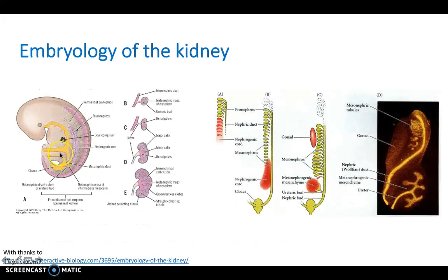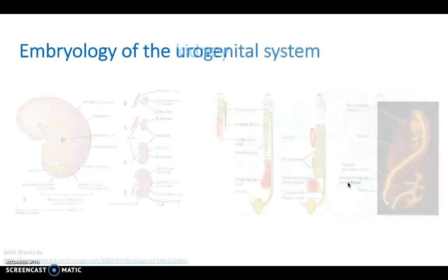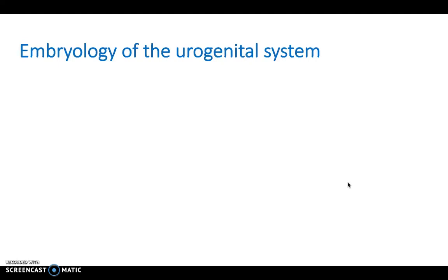In the diagrammatic view you can see pronephros first, then mesonephros, then finally metanephros — the metanephros is our final functioning kidney. Importantly, the kidneys ascend from the pelvis up to their normal position in the posterior abdomen.